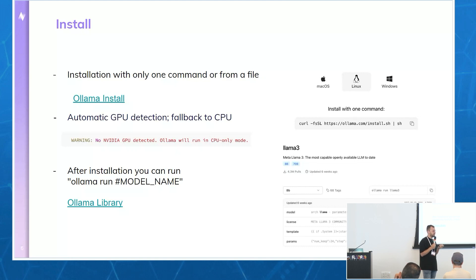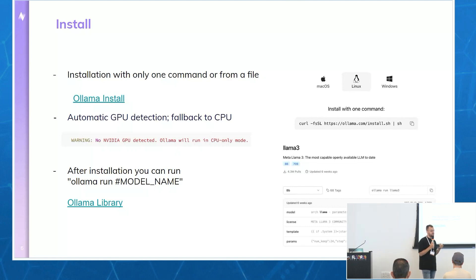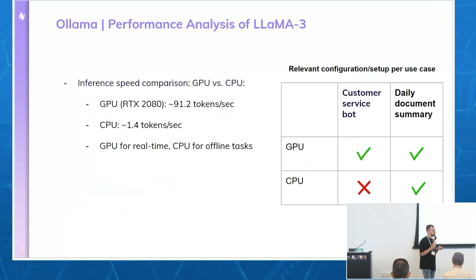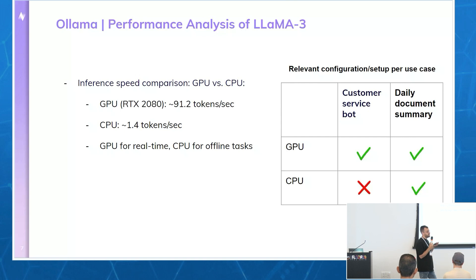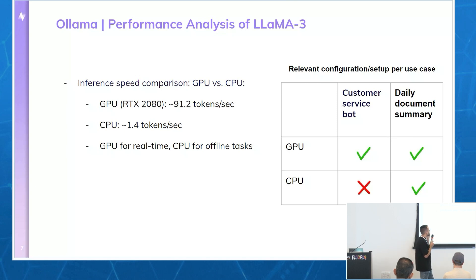After installing Ollama, you can use any model in the library just by calling 'ollama run model-name'. I checked Ollama on two different platforms — with GPU and without GPU. The GPU I tested is not state-of-the-art; it's an RTX 2080, a fairly old GPU. The rate I got was more than 90 tokens per second — a pretty impressive rate without doing anything special.